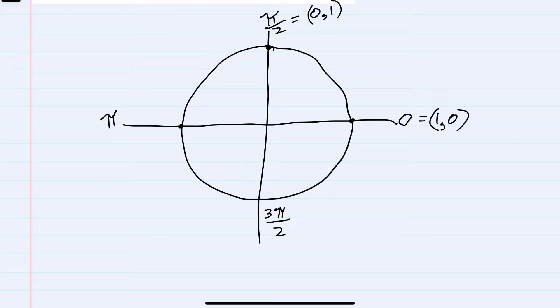At π this coordinate would be (-1,0). 3π/2, that point is (0,-1). So these are our most basic special angles.